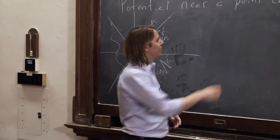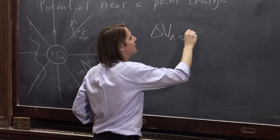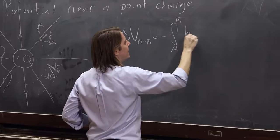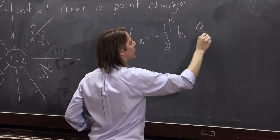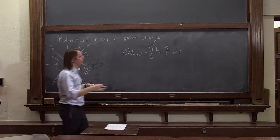We have the potential, oh, we still have to do the integral. Oh my gosh, delta v, a to b, equals minus integral from a to b of keq over r squared dr. Got rid of all the nasty vector stuff and everything. Now we just do the integral.